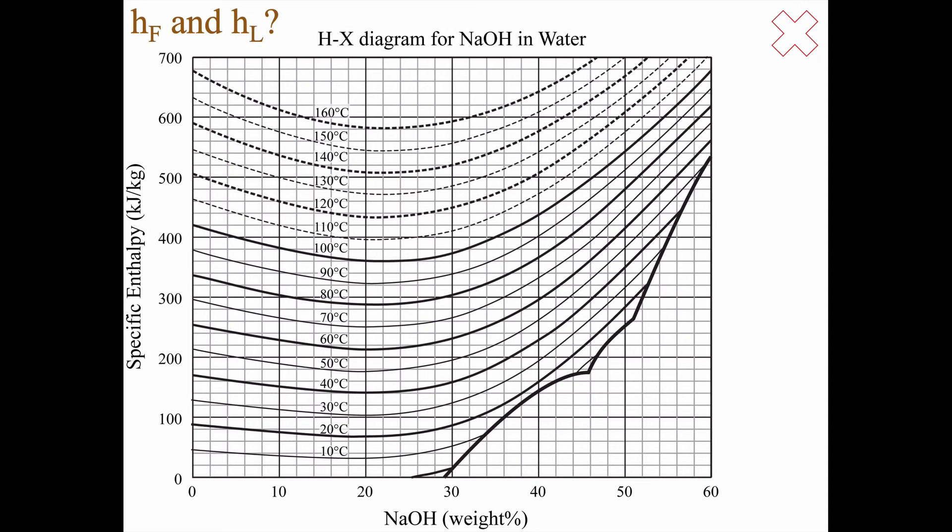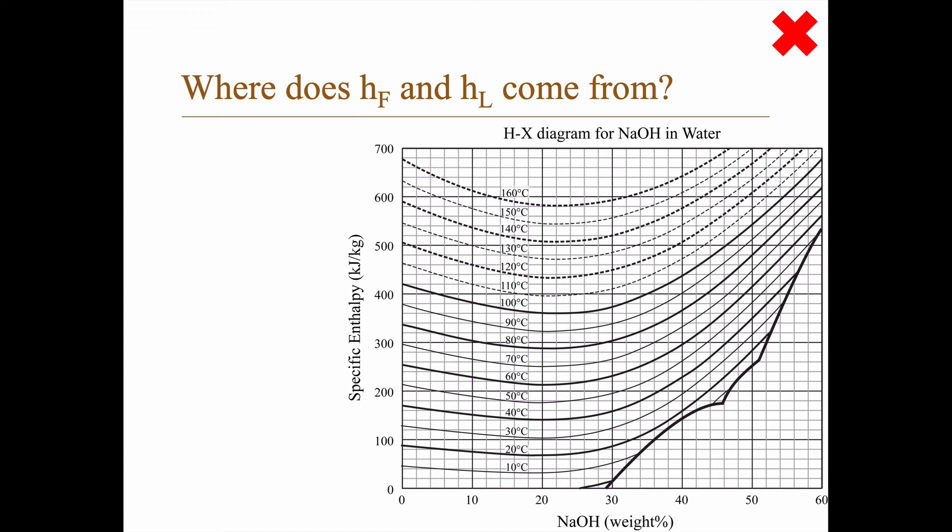In this exercise, I've given you the enthalpy of the feed and the liquid coming out. But where do we get those values? Well, it comes from this kind of diagram. The feed has 38 degrees Celsius and 20%. That's approximately 130. The liquid flow coming out has 87 degrees and 50%, which is around 510. At an exam, I might give you a diagram like this, and then please mark where you have read. Or I give you an equation, and then be clear about how you calculated these enthalpies.